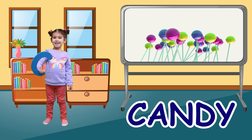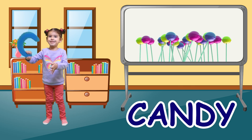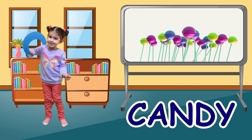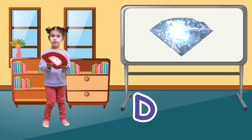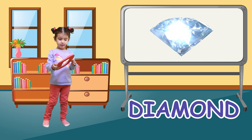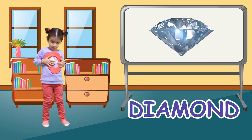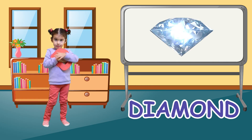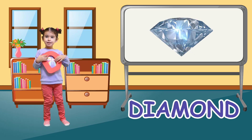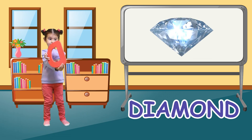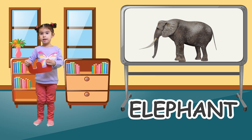C is for candy. K, candy, K, candy, C, candy. D is for diamond. D, diamond, D, diamond, D, diamond.